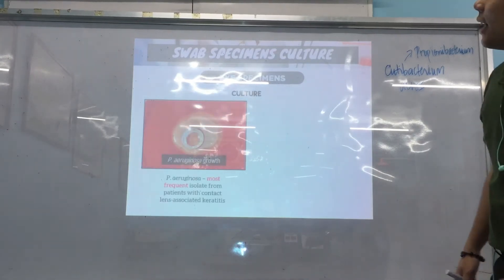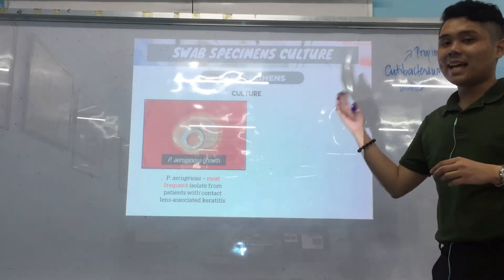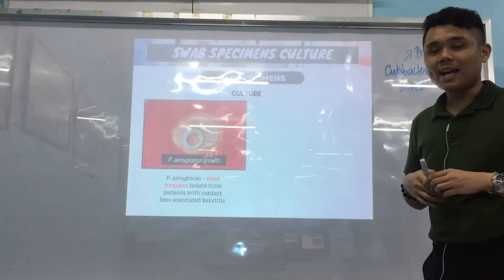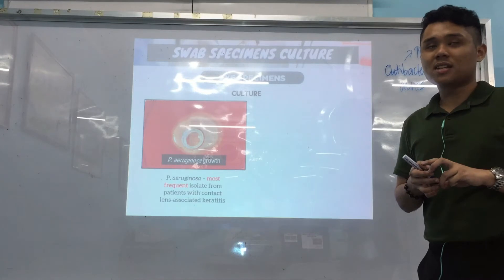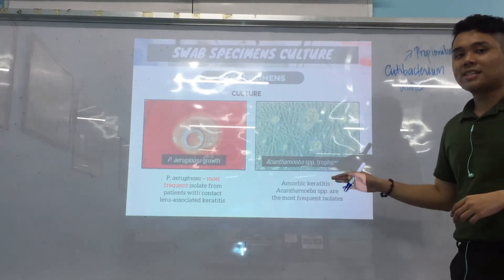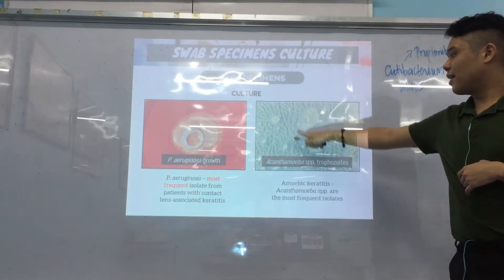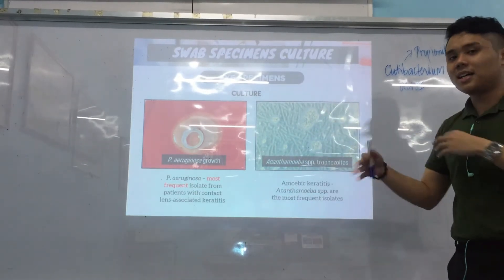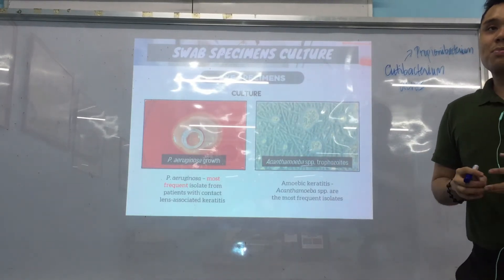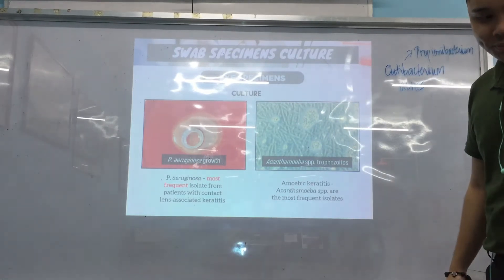For eye culture, Pseudomonas aeruginosa is considered the most common cause of contact lens–associated keratitis — inflammation of the eye. Eye infections can be caused by many organisms, not just bacteria. For example, amoebic keratitis is caused by Acanthamoeba species — these are Acanthamoeba trophozoites feeding on E. coli. So eye infections can be caused by parasites like Acanthamoeba as well.